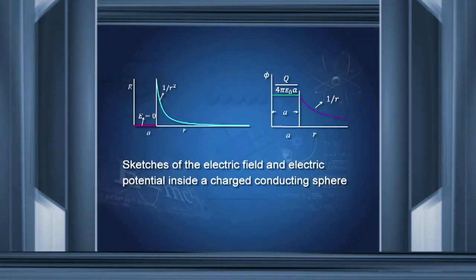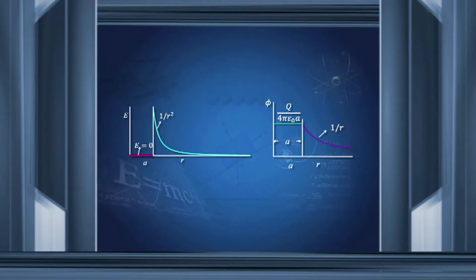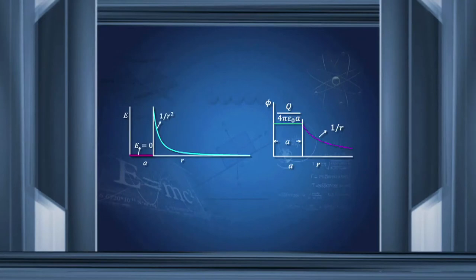The electric field inside the conducting sphere is 0, so E equals 0 up to the surface. At the surface it has a value, and then it decreases as 1/R². Because E is 0 inside, the potential inside is constant, with the same value as at the surface of the sphere. From that point outside the sphere, the potential varies as 1/R.